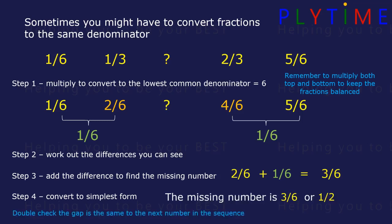We can double check the gap is the same to the next number. So 4 sixths minus 3 sixths equals 1 sixth — it's the same gap.